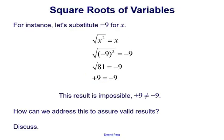So for instance, if we substitute in a negative number for x, we would have the square root of x squared is equal to x. So if we're substituting in x = −9, that would be the square root of negative 9 squared is equal to negative 9, which then simplifies: negative 9 squared is 81, so the square root of 81 would equal negative 9.